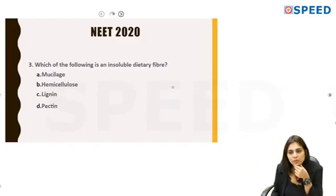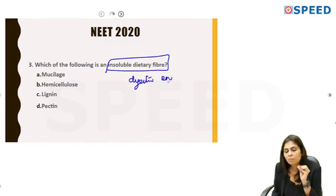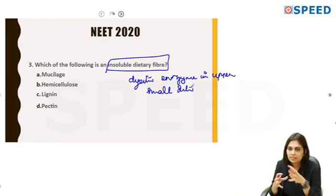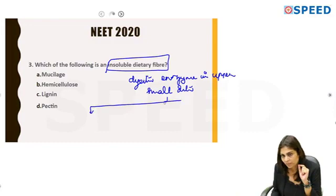The next question asks: which of the following is an insoluble dietary fiber? Dietary fibers are dietary contents resistant to action by digestive enzymes. Something is considered a dietary fiber only when it is not digested by intestinal enzymes in the upper small intestine. Undigested substances then reach the colon, where they add bulk to stools, helping relieve constipation. Dietary fibers are classified into two types depending on whether they are acted upon by colonic microorganisms.